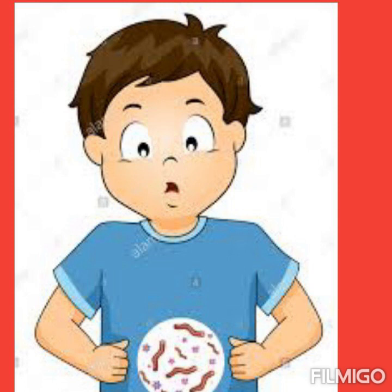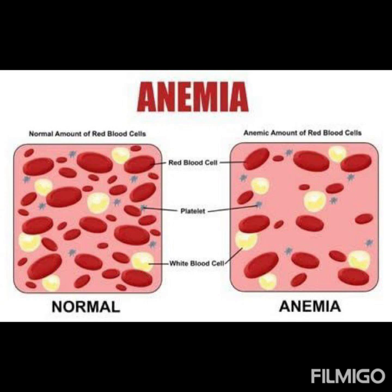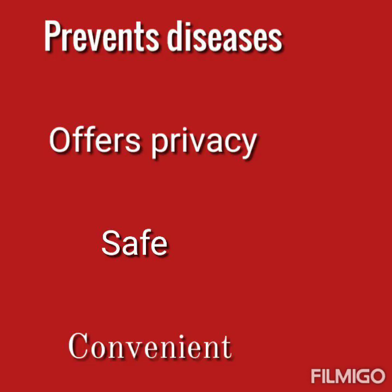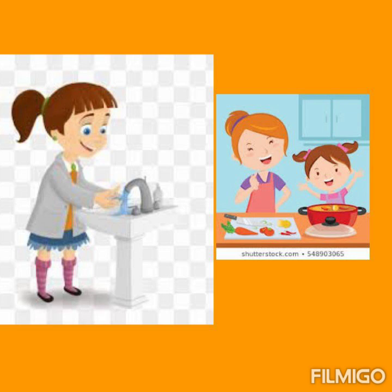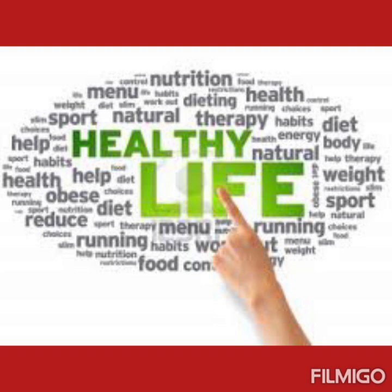Anemia is a condition where the blood count of red blood cells is very low. So it is very necessary to use toilets. It is important to have toilets because they prevent diseases, offer privacy, and are convenient and safe. We should also wash our hands after using the toilet. This will help us lead a healthy life.